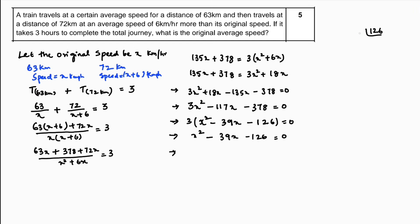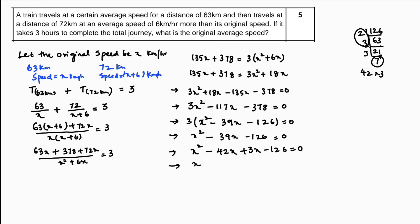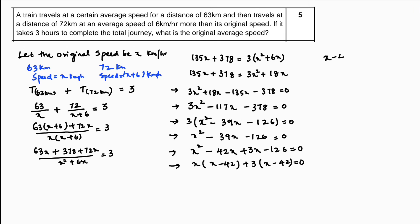To factor x² - 39x - 126, we find factors of 126: 2×63, 3×21, 7×18. Taking 42 and 3: 42×3 = 126, and 42 - 3 = 39. So: x² - 42x + 3x - 126 = 0, giving x(x - 42) + 3(x - 42) = 0, therefore (x - 42)(x + 3) = 0. So x = 42 or x = -3.